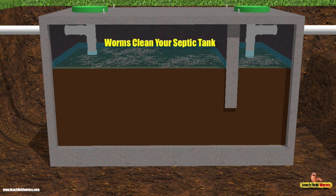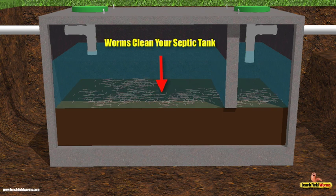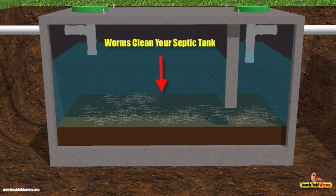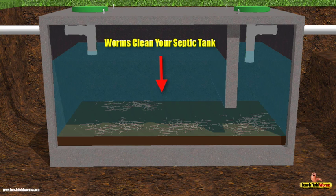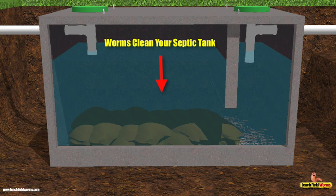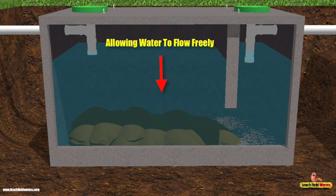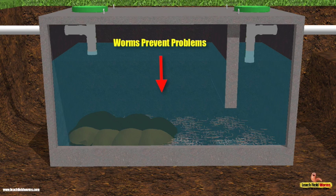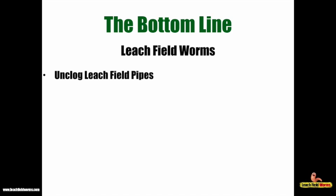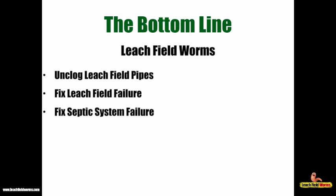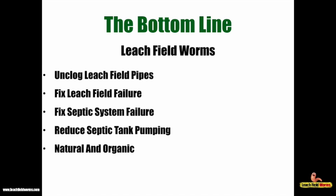While the worms are at work in your drain field pipes, they're also at work in your septic tank, eating the sludge and completely cleaning it out — once again allowing wastewater to flow freely from your property into the tank, into the drain field, and then straight into the soil. Leach field worms unclog leach field pipes, fix leach field failure, fix septic system failure, reduce septic tank pumping, and they're natural, organic, and save you thousands of dollars on repair costs.